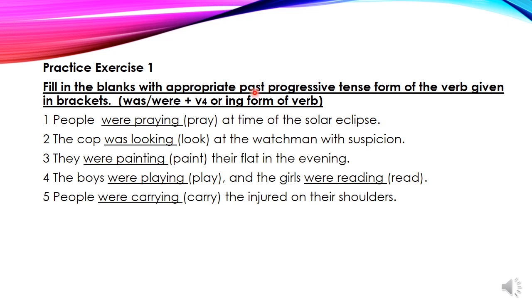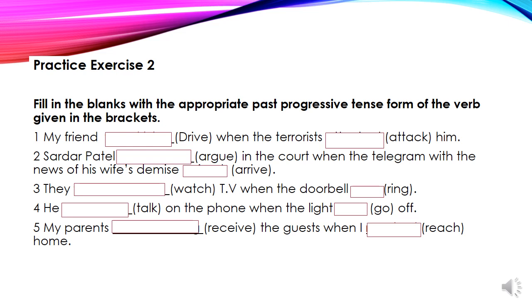Remember: past progressive tense is was or were plus V4, or the ING form, or present participle. Practice exercise 2. Fill in the blanks with the appropriate past progressive tense form of the verb given in brackets. We have to fill in the blanks with the past progressive tense form. In each question we have two blanks — one for the past progressive tense form and another for the simple past form.